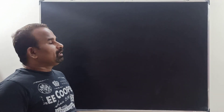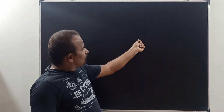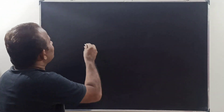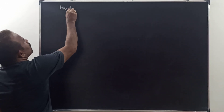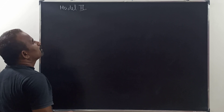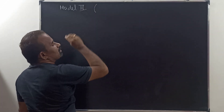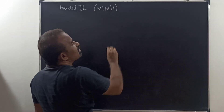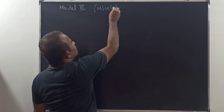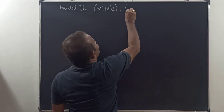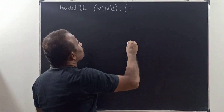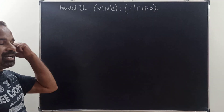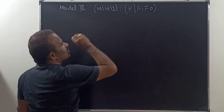Good morning. This class we are going to discuss about problems in queuing theory, particularly Model 3. Model 3 is M/M/1 — single channel, where one stands for single channel, with finite arrival K, and first in first out discipline. This is finite arrival and single channel — both are most important characteristics of this model.